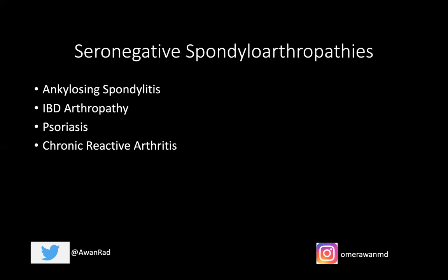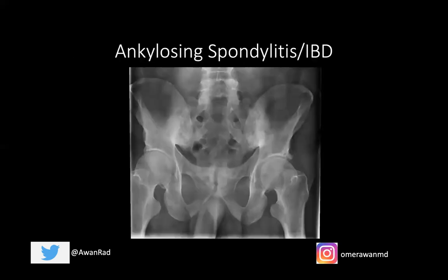These diseases typically feature spondyloarthritis with back pain in the spine, peripheral arthritis, and extra-skeletal manifestations. I'm going to group ankylosing spondylitis and IBD arthropathy together, and psoriasis and chronic reactive arthritis together, because radiographically these two pairings are identical — AS and IBD are literally indistinguishable on imaging.